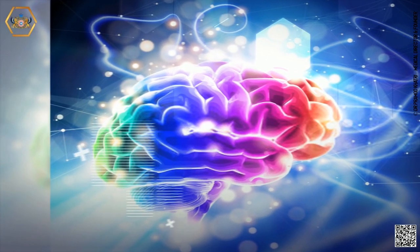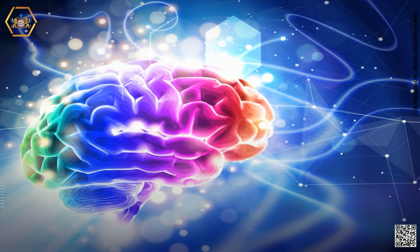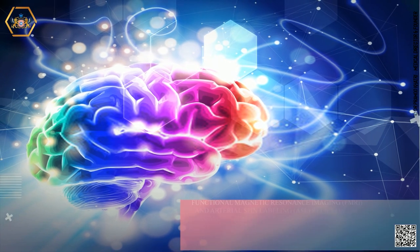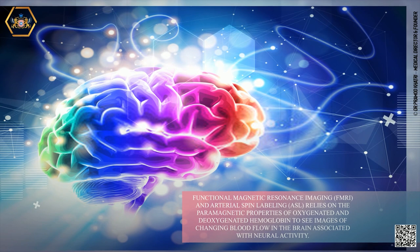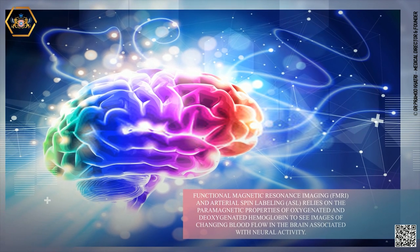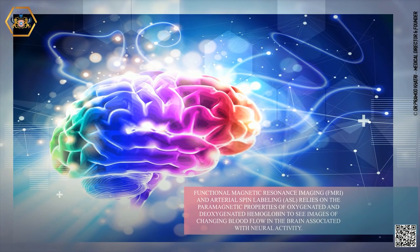Functional magnetic resonance imaging, fMRI, and arterial spin labeling, ASL, relies on the paramagnetic properties of oxygenated and deoxygenated hemoglobin to see images of changing blood flow in the brain associated with neural activity.